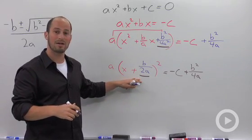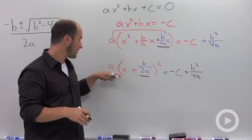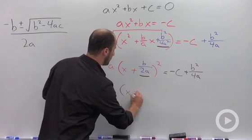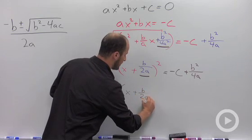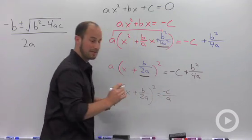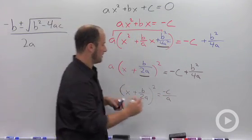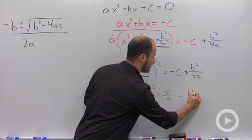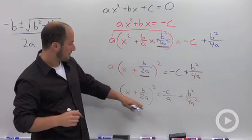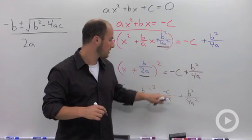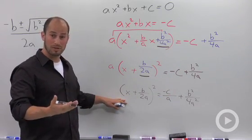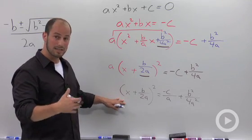Okay, we now want to try to get our squared terms by itself. In order to do that, we need to divide by a, giving us x plus b over 2a squared is equal to negative c over a plus b squared over 4a squared. So this a got distributed to both terms, leaving us right here. Okay, so now we need to take the square root of both sides. All right, the square root of a square is just going to cancel out.